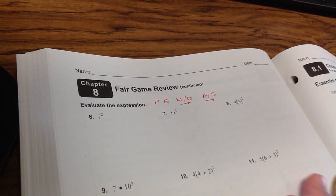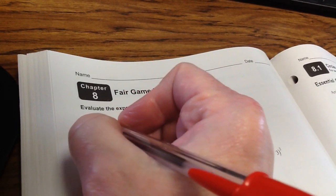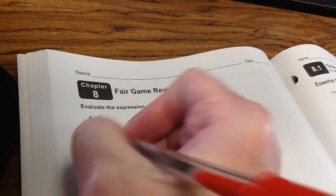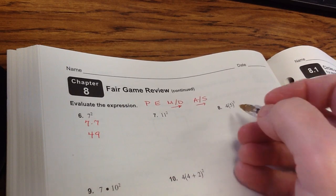So first, 7 squared is going to be 7 times 7, which is 49. Skip number 7, you can do that on your own.